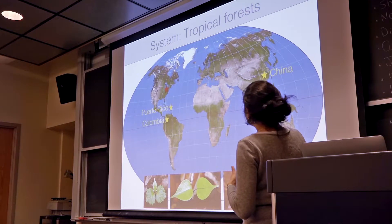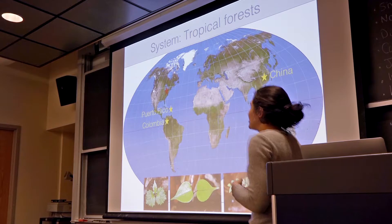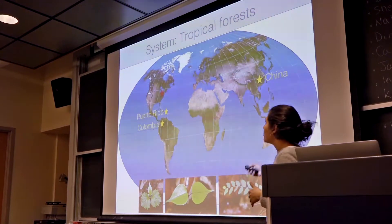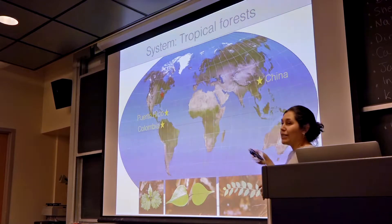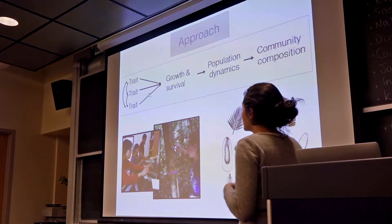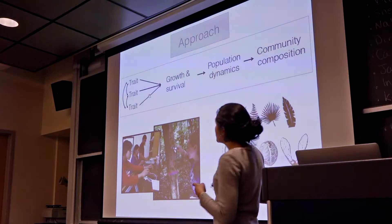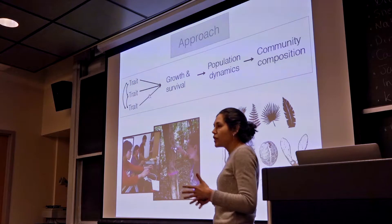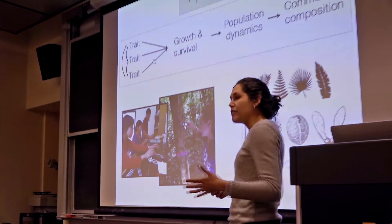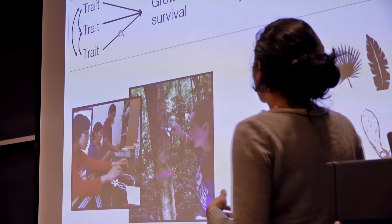I have worked in the past in China, I have another project in Puerto Rico and Colombia, but now I'm planning to extend my research into a temperate zone and start a project in Michigan at the George Reserve. My approach consists of integrating information on functional traits — those features of organisms that mediate interactions between individuals and the environment, while also having an impact on performance, growth, survival, or reproduction.